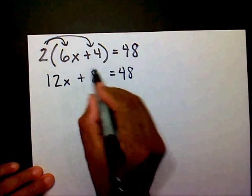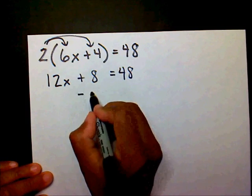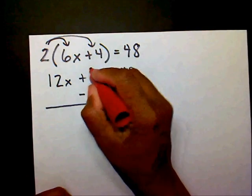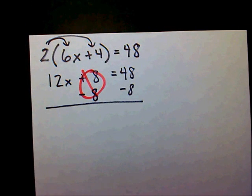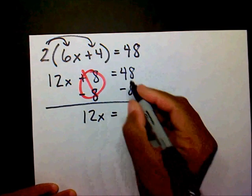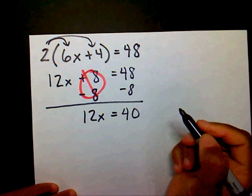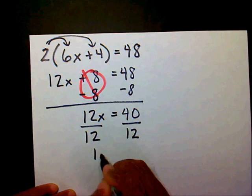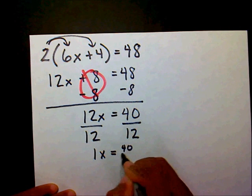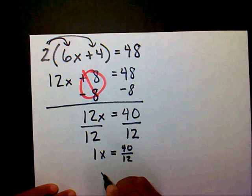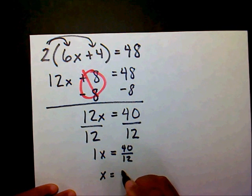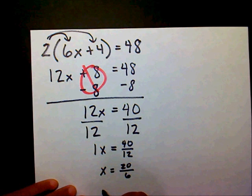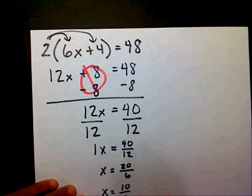I'm going to find my constant here. I'm going to get rid of this constant, so I'm going to do the opposite of plus 8, which is subtract 8 on both sides. My 8s are going to cancel out. On my left hand side, I'm left with 12x. On this side, I'm left with 40. I'm going to divide both sides by 12. So I'm left with 1x equals 40 over 12, and I can simplify that down to 20 over 6, and it's still not in simplest form. I can simplify that down into 10 over 3.